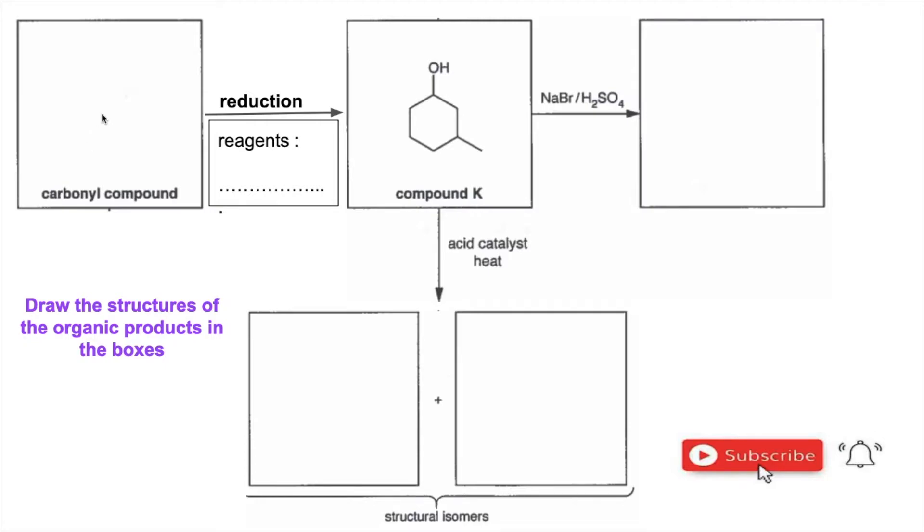So, starting on the left hand side, which carbonyl compound, when reduced, will generate compound K, which is secondary alcohol there.